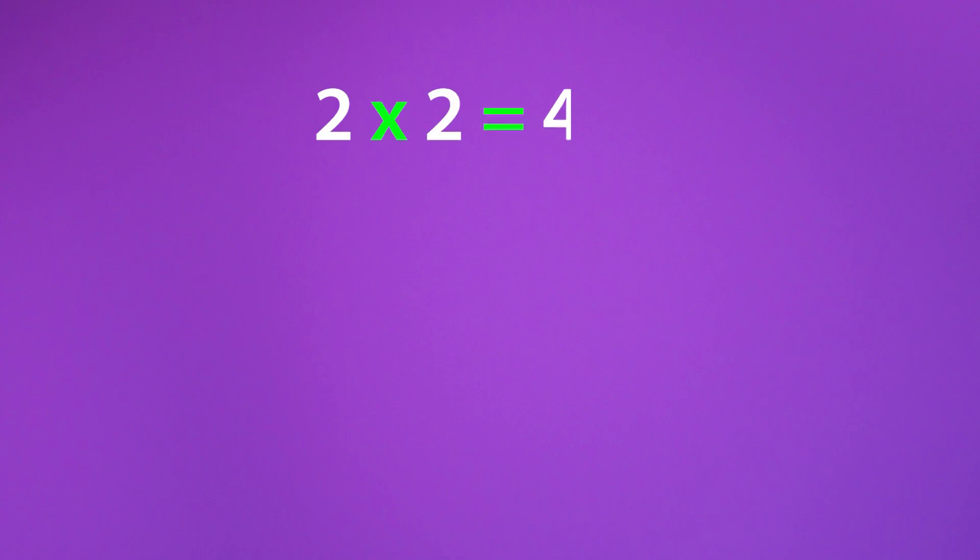2 times 2 is equal to 4. Once more multiplying by 2, we get 8. It's a breeze.